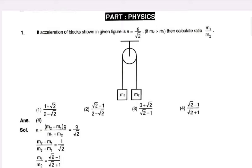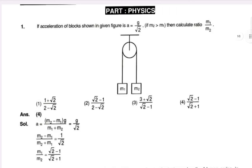The first question is: if the acceleration of the block shown in the given figure is a equal to g root over 2, we will have to calculate the ratio of m1 by m2. We will calculate the acceleration formula and the ratio of m1 by m1 plus m3 into g.